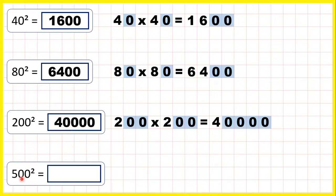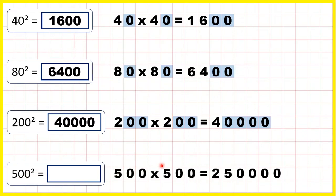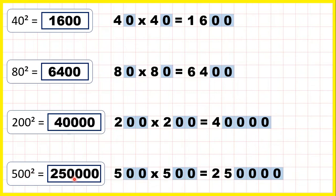And now 500 squared means 500 times 500. That's 250,000, because 5 times 5 is 25, then because we have 4 end zeros in our multiplication question, we need 4 end zeros in the answer. So 500 squared is 250,000.